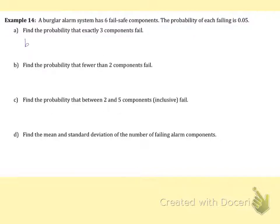So we're going to go to binomial PDF. We have a total of six components. We're looking for the probability that they fail, so we're using that 0.05. And then we want to know if exactly three of them fail. So we put this in our calculator, we'll get 0.002143.